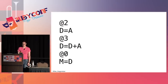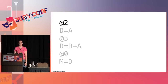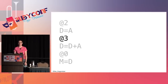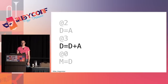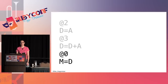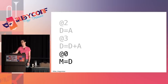Here's how to add 2 + 3 in assembly: @2 loads 2 into A, then D=A moves it to D. Then @3 loads 3 into A, and D=D+A adds them, assigned to A. Then @0 loads address 0 into A, and M=A stores the result in memory cell 0. It accesses memory because we're using M rather than A.